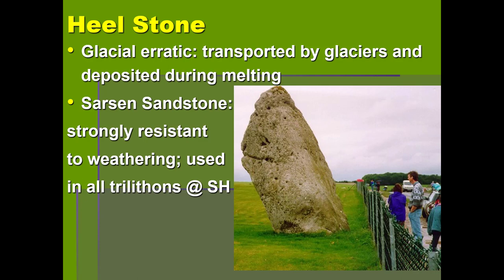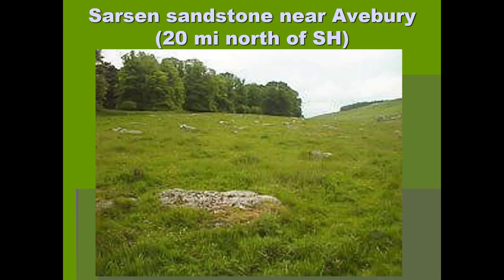The next slide shows what sarsen sandstones look like today in Avebury — just big rocks littered in a field. Avebury is 20 miles north of Stonehenge, so before the advent of the wheel, the Stonehenge builders had to figure out how to take these enormously heavy stones — 40 to 50 tons — and get them 20 miles south to erect at Stonehenge. At least they didn't have to quarry them; they just had to get them out of a field, shape them, and drag them 20 miles over variable terrain.